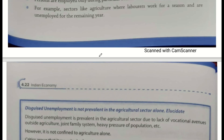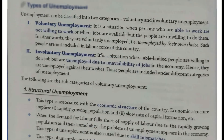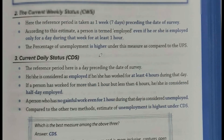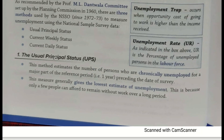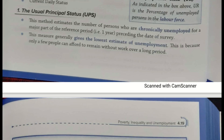Is method ko aapko bolna nahin hai. Main aapko phir se recall kara deta hoon — yeh hai dosto aapka Usual Principal Status method, jismein maine bataaya tha aapko: pichle ek saal tak, jab se survey conduct ho raha hai, usi date se pichle ek saal tak ek reference period ko yahan ek saal maana jaata hai, 365 din maana jaata hai, jismein hum log chronically unemployed logon ko dekhte hain, aur yeh humein sabse lowest estimate deta hai unemployment ka.